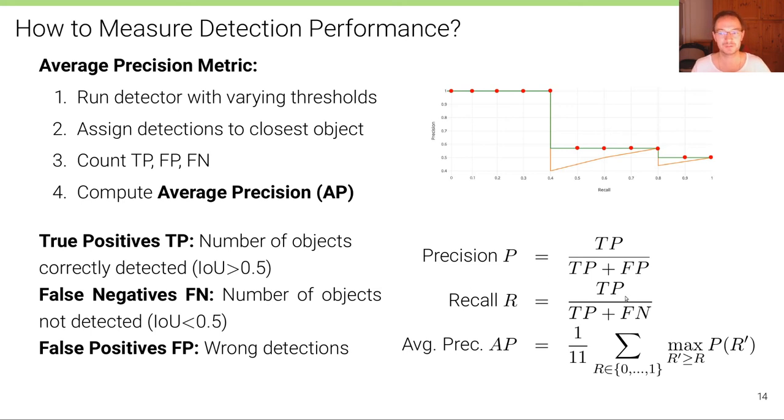A high precision means that the objects that are detected by the object detection algorithm are actually correct. And a high recall means that most of the objects that are in the ground truth are actually detected, but it doesn't take into account if there's any false positives.